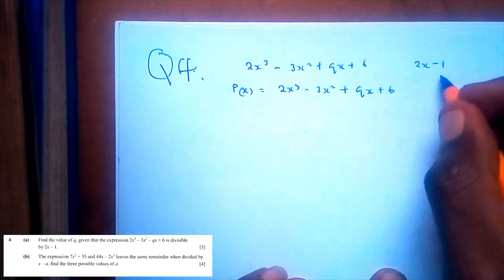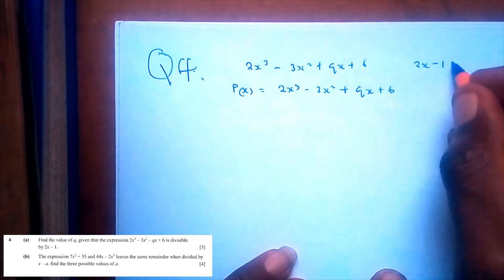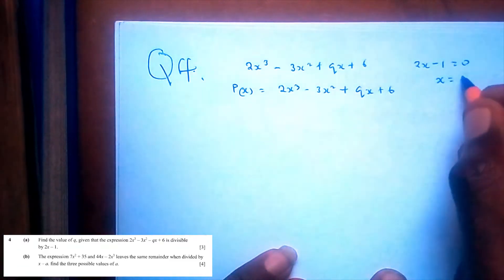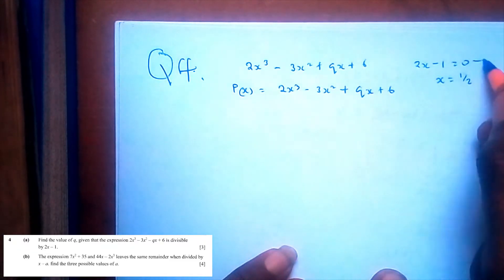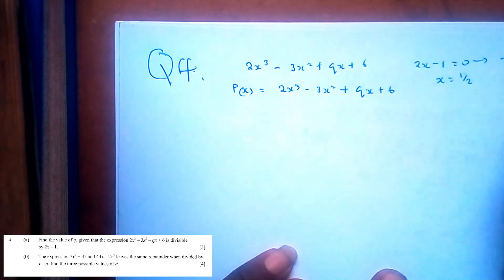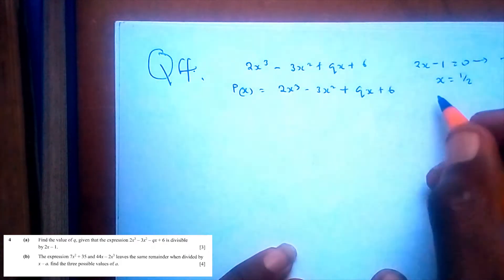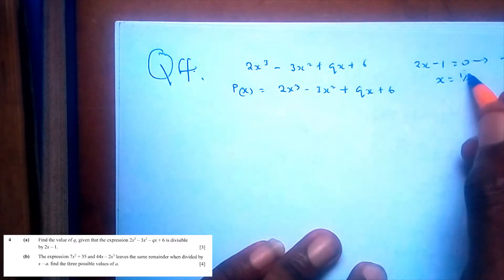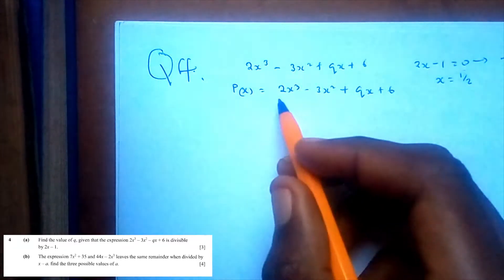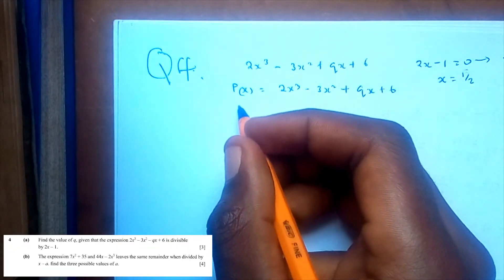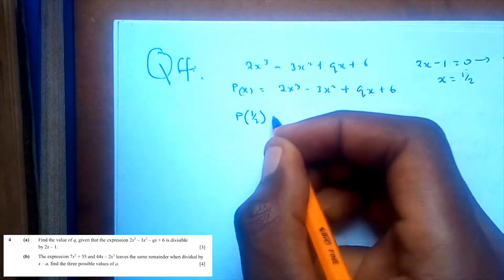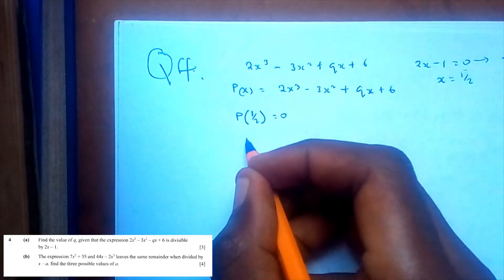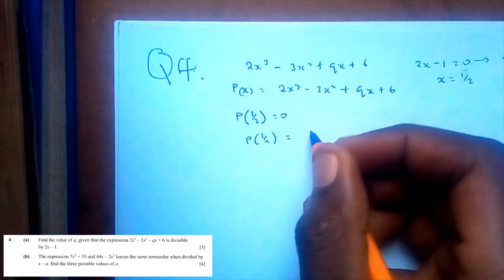Since it is divisible by (2x minus 1), setting 2x minus 1 equal to zero gives x equals 1/2. Since (2x minus 1) is a factor, by the factor theorem, p(1/2) must equal zero. So p(1/2) equals 2 times (1/2) cubed minus 3 times (1/2) squared plus q times (1/2) plus 6.